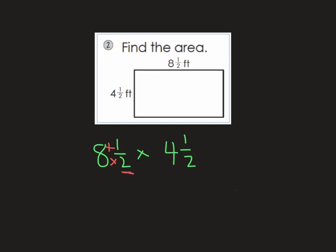So if I do this one and I start at the 2, I go 2 times 8 is 16, plus 1 is 17, and the bottom number stays the same. Okay, that's how you make that into an improper fraction.